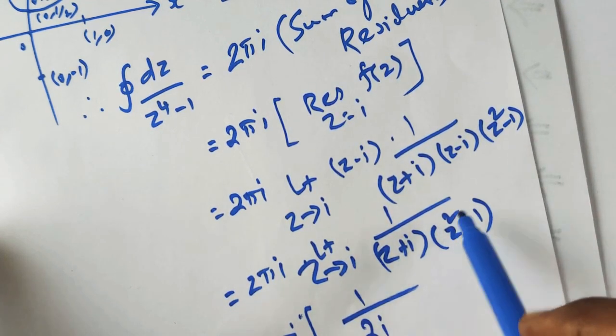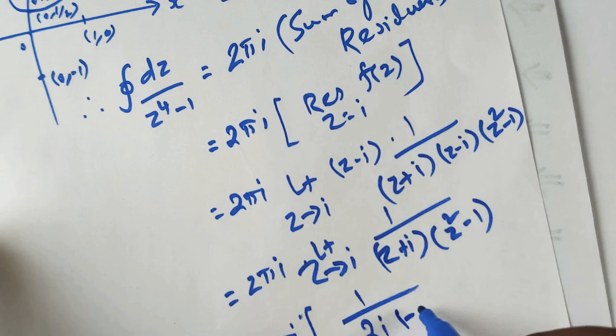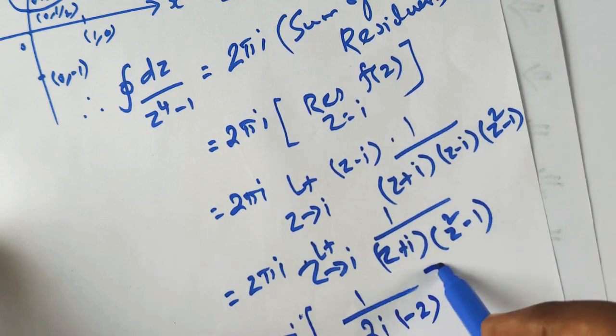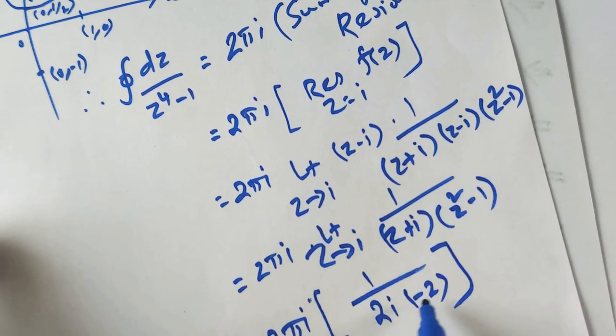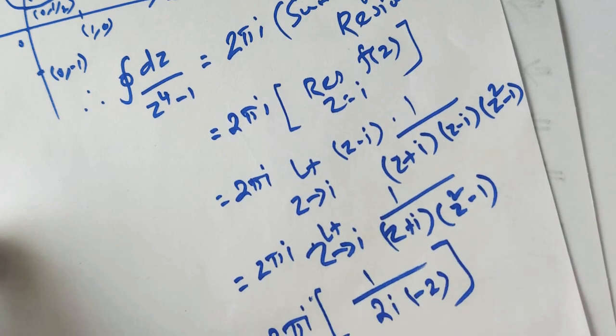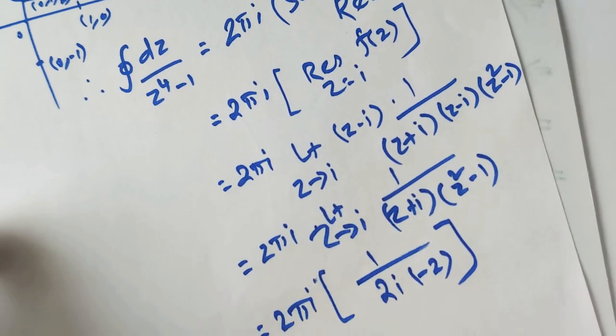Evaluating the limit at z = i: we get 1/((i + i)(i² - 1)) = 1/((2i)(-1 - 1)) = 1/((2i)(-2)) = 1/(-4i). Therefore the integral equals 2πi × 1/(-4i) = 2π/(-4) = -π/2.